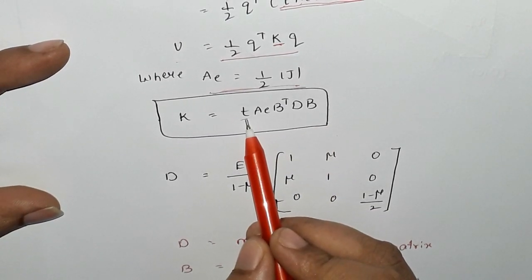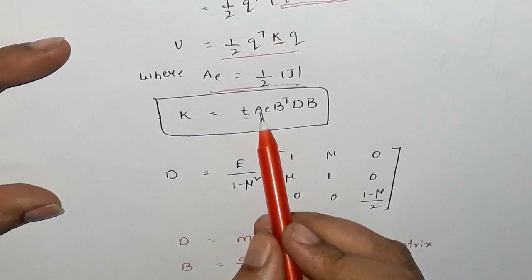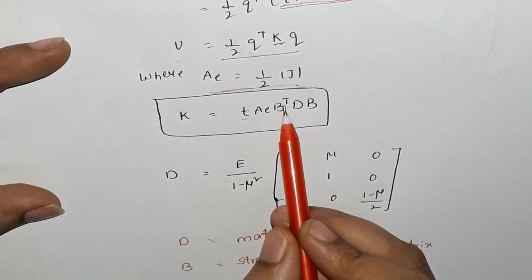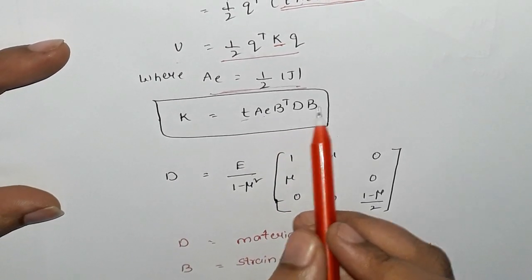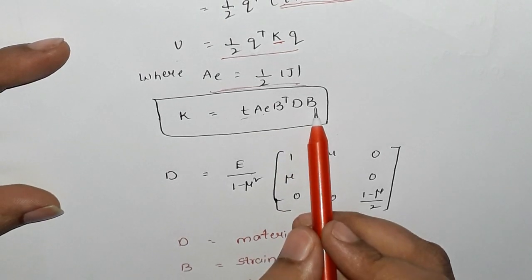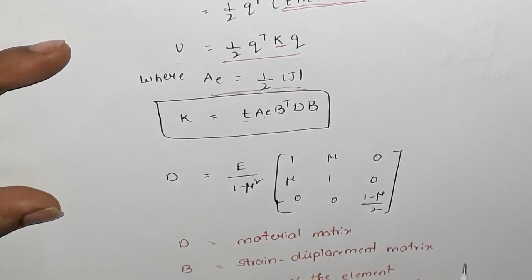T is the thickness of the element, A is the area of the element. If you want to find out BN, we also have B transpose. B is our strain displacement matrix.